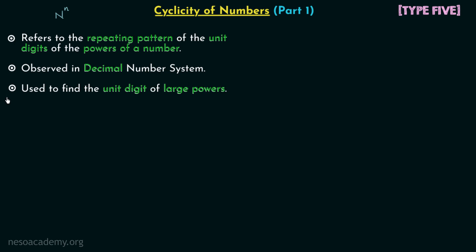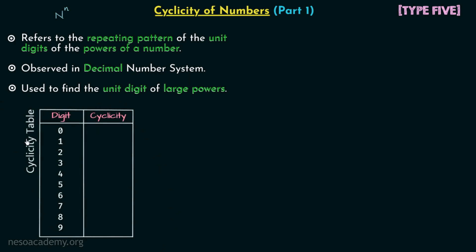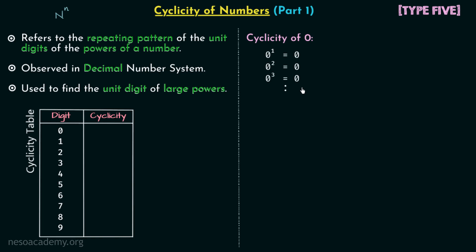Now we will move on to our cyclicity table. In this table we have two columns: the first column has the digits of the decimal number system from 0 to 9, and the second column will have the cyclicity of all these digits. We will one by one find out the cyclicity for all the digits. Let's start with the first digit, which is zero. To find the cyclicity of a digit, we calculate the various powers of that digit and analyze the results.